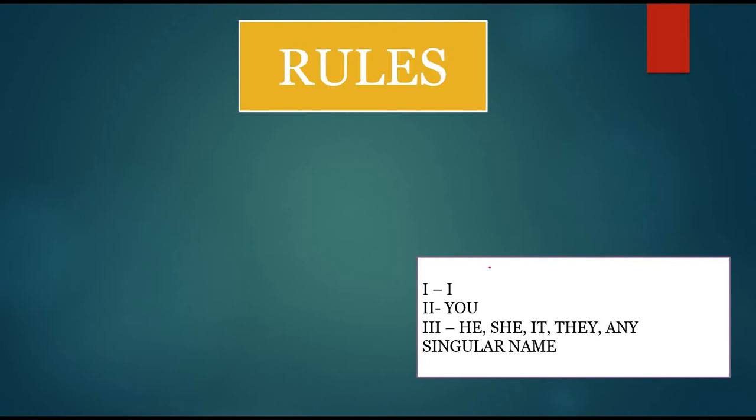Before talking about sentences, let me tell you something about persons in English. There are three persons: first person, second person, and third person. First person consists of I, and we. Second person consists of you. This 'you' can be used for both singular as well as plural, but 'I' can be used only for singular sentences.